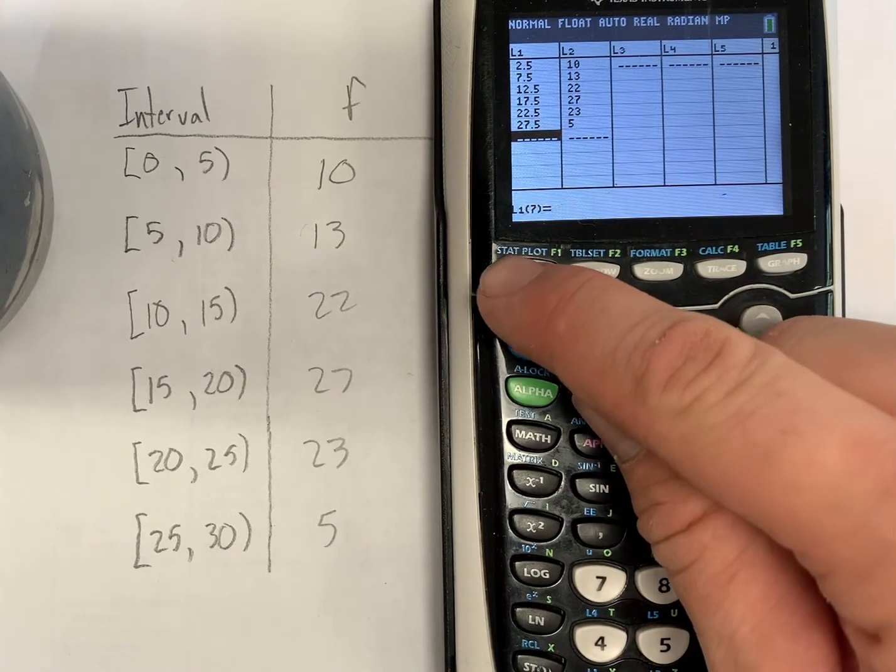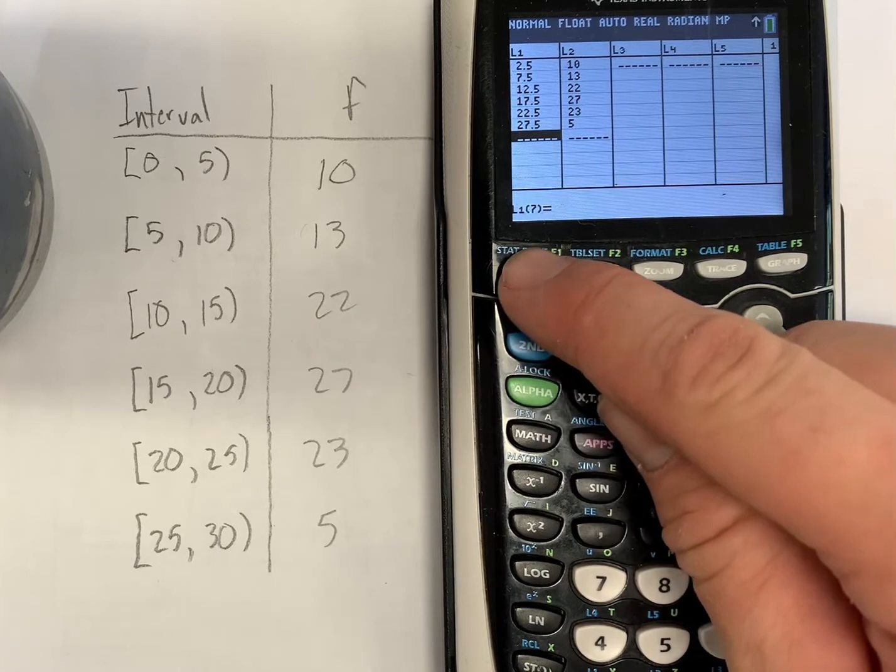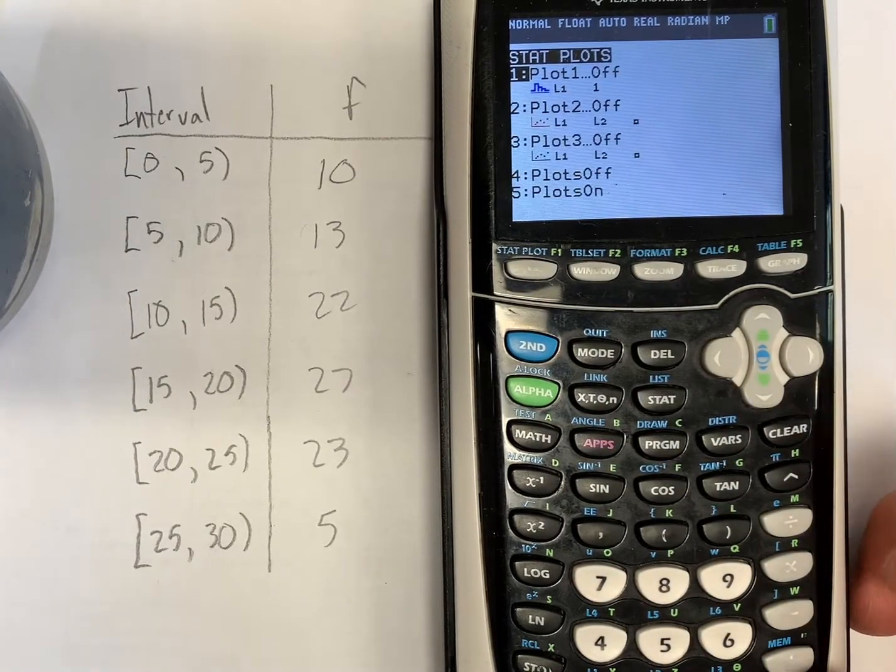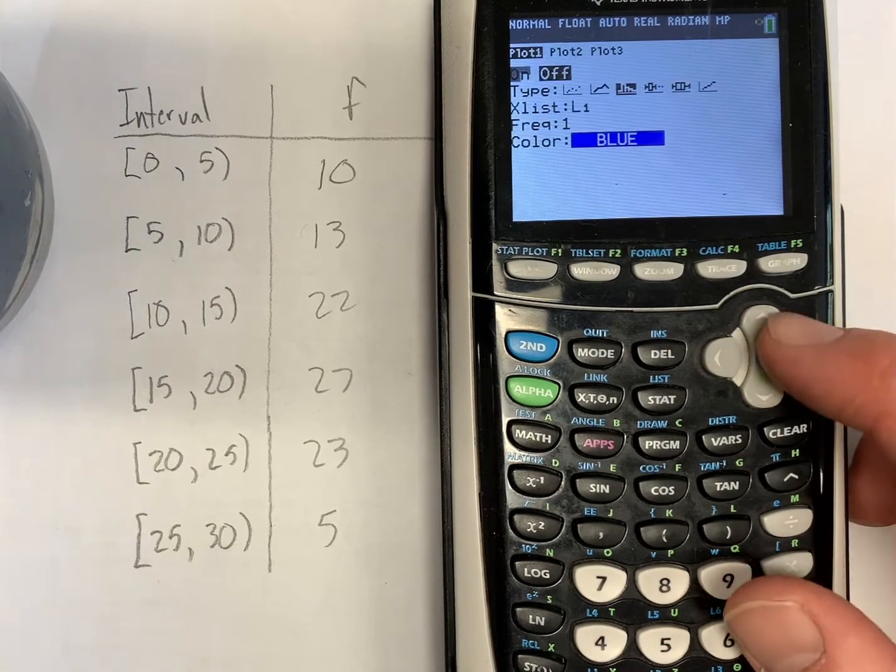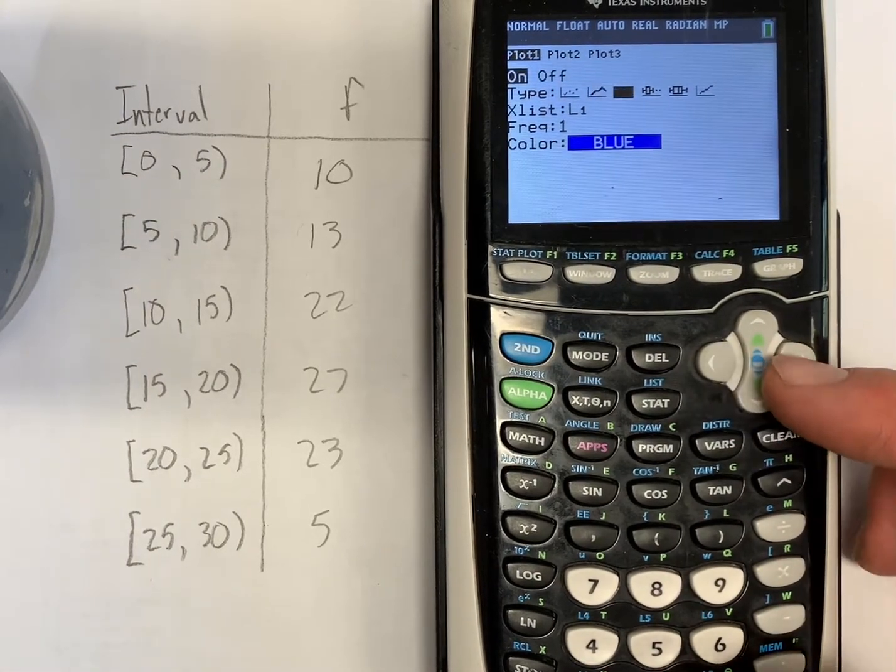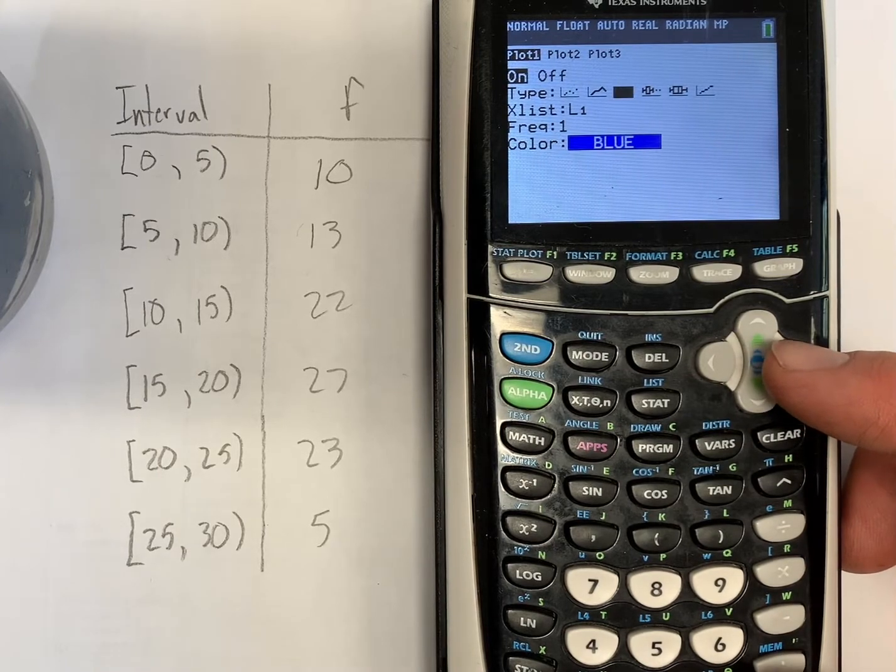So I have to type in second function to get into my stat plot menu. So it's under the y equals button and I'll turn on stat plot 1. I do that by pressing the enter button at the bottom of the calculator. I have to make sure that on is highlighted and I'm going to go select my type. So I'm going to select the histogram here.